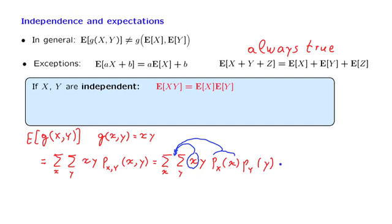And this is going to yield a summation over x of x times the marginal PMF of x, and then the summation over all y of y times the marginal PMF of y. But now we recognize that here we have just the expected value of y. And then we will be left with another expression, which is the expected value of x.